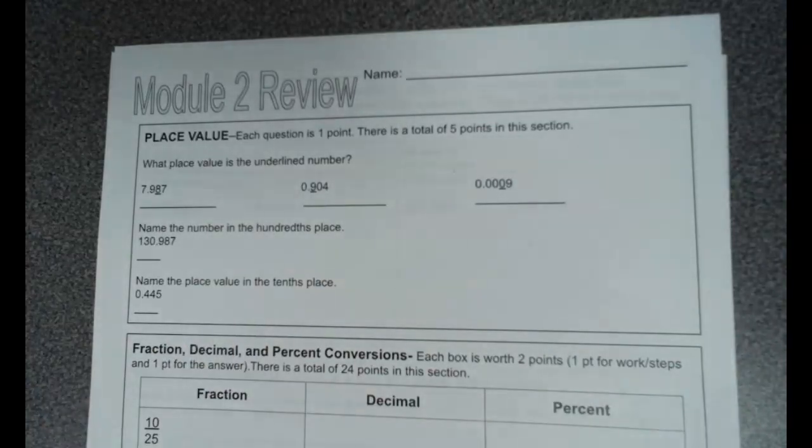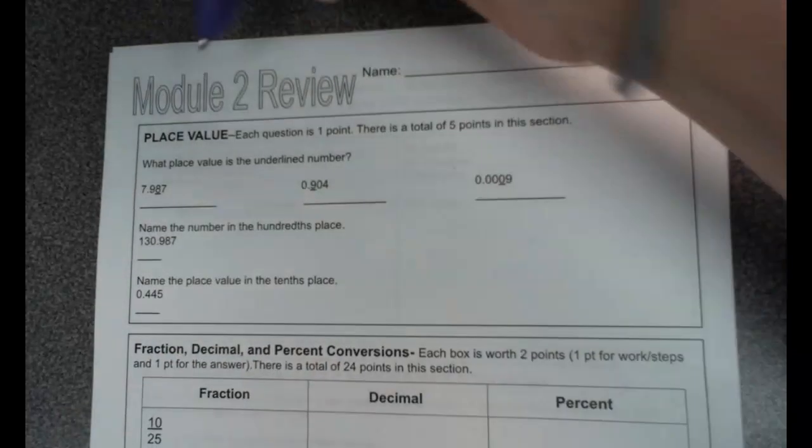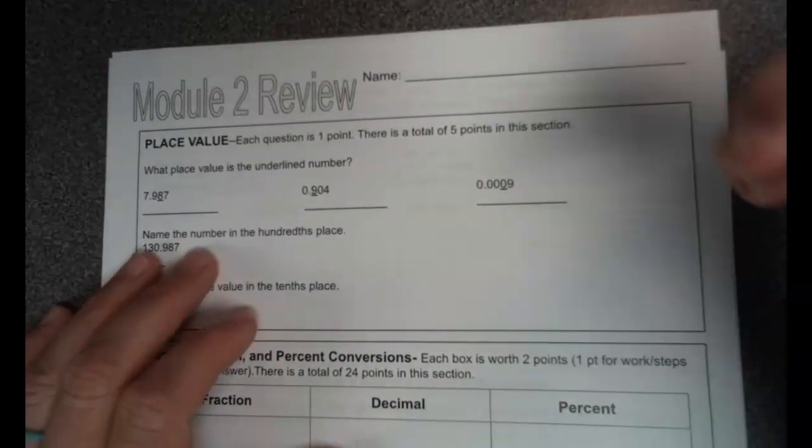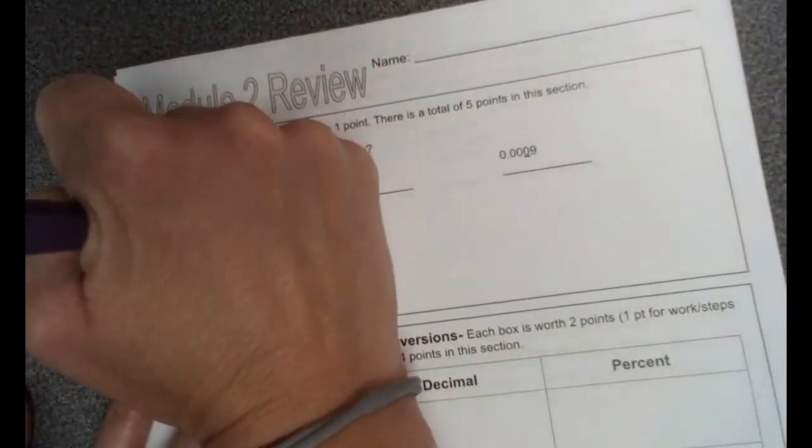Okay, this is the module two review. This will be very similar to your test, so let's take a look. What place value is the underlined number? So we look right here at the eighths, and we know that's the hundredths spot, so we're going to put hundredths.